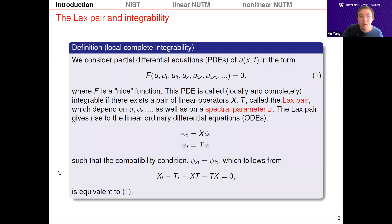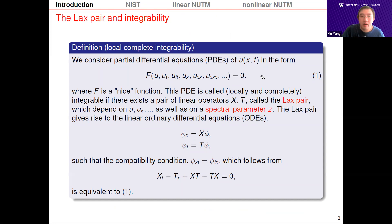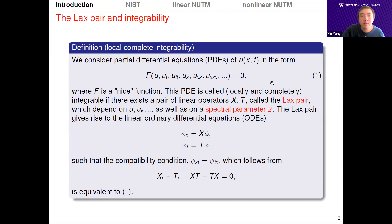Luckily, for all three types of equations shown, they all have an important property that allows us to compute them efficiently and accurately. This property is called integrability. We consider partial differential equations of this form, where H[u] is a linear or nonlinear function. This PDE is integrable if there exists a pair of linear operators, capital X and capital T, called the Lax pair, which depends on u and its derivatives as well as a spectral parameter z. These Lax pairs give rise to linear ordinary differential equations, and the compatibility condition reduces back to the original equation.